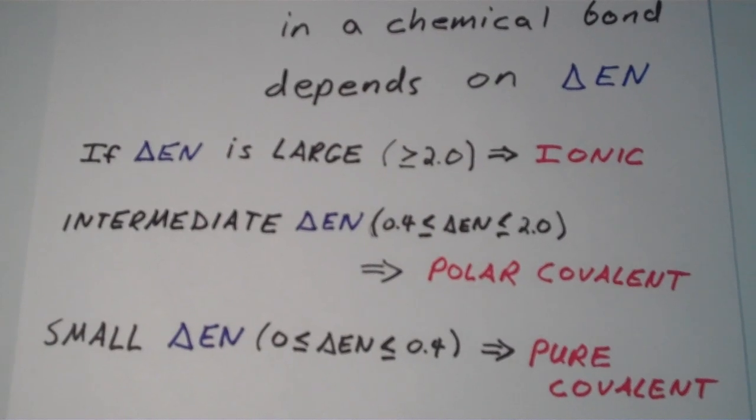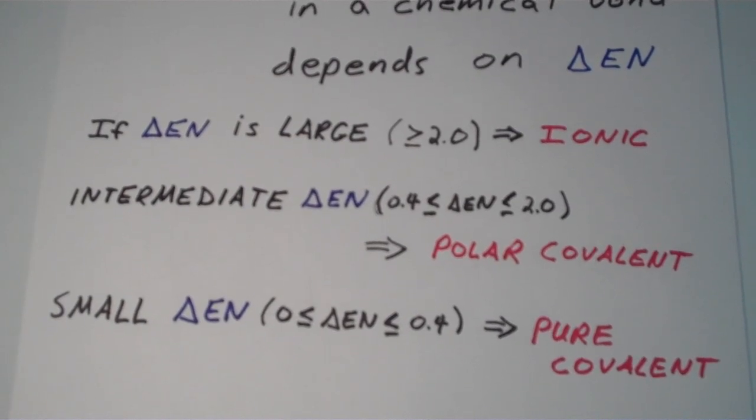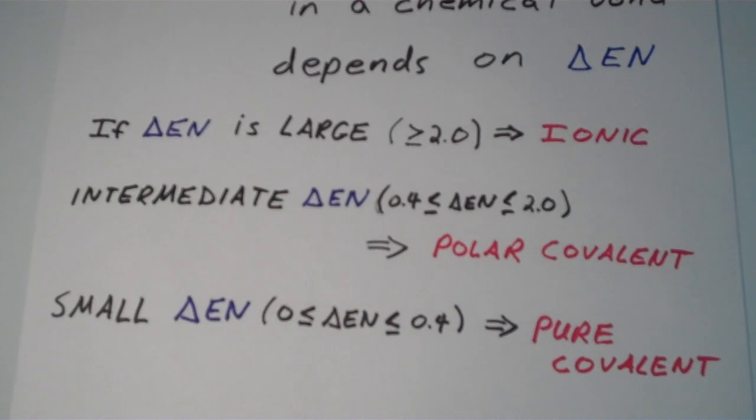Lastly, if the electronegativity difference is small, so if it falls between 0 and 0.4, that usually corresponds to a pure covalent bond. That means you have two atoms that are virtually identical, same element bonded to one another.